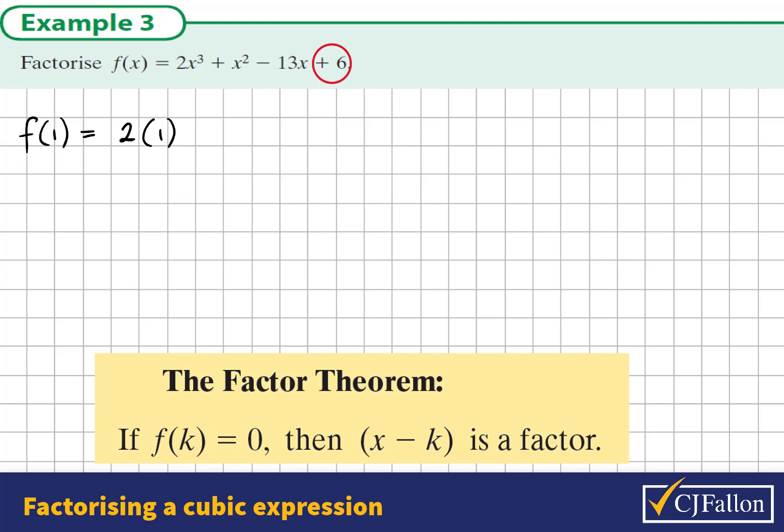So you might try for instance x equals 1. If we substitute in x equals 1 we get 2 times 1 cubed which is 2, plus 1 squared which is 1, minus 13, plus 6. When we substitute this in we see that we get negative 13 plus 9, so that's an output of negative 4.